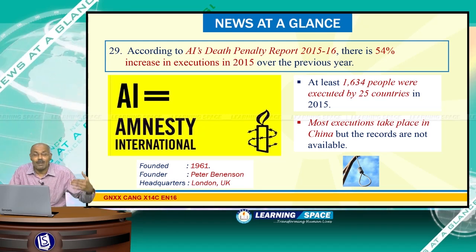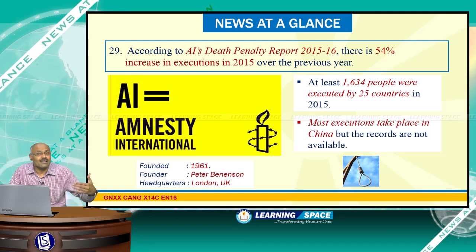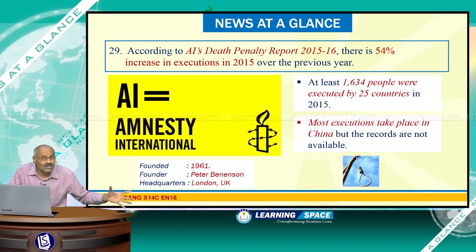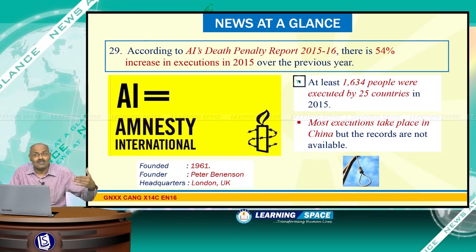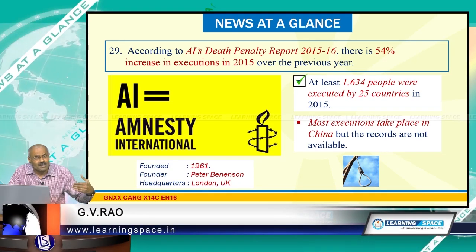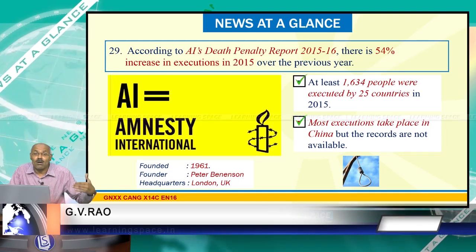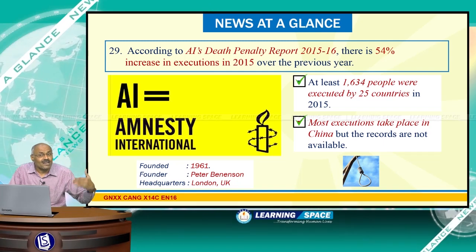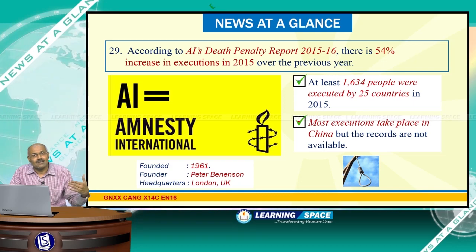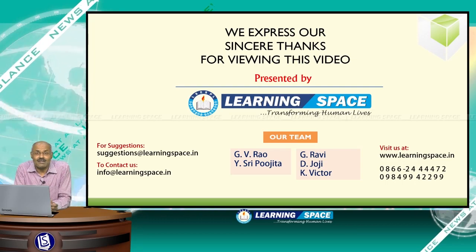According to Amnesty International's death penalty report — Amnesty International was founded by Peter Benenson in 1961 and is based in London, UK — there was a 54 percent increase in executions in 2015 over the previous year. At least 1,634 people were executed by 25 countries in 2015. As per the report, most executions took place in China, though records are not fully available as China is not accessible for information in this field. With this, we conclude News at a Glance. Thank you.